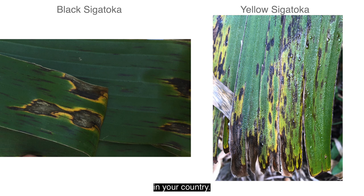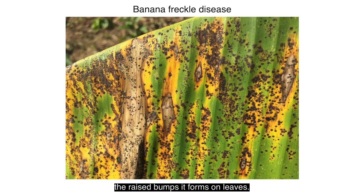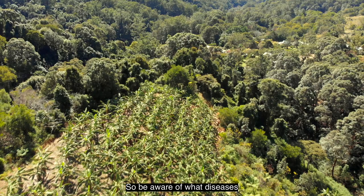Black Sigatoka and yellow Sigatoka are very difficult to tell apart. Banana freckle disease can be detected by the raised bumps it forms on leaves. It is also important as it can affect the fruit. Banana freckle disease is not present in every country, so be aware of what diseases are common in your country.